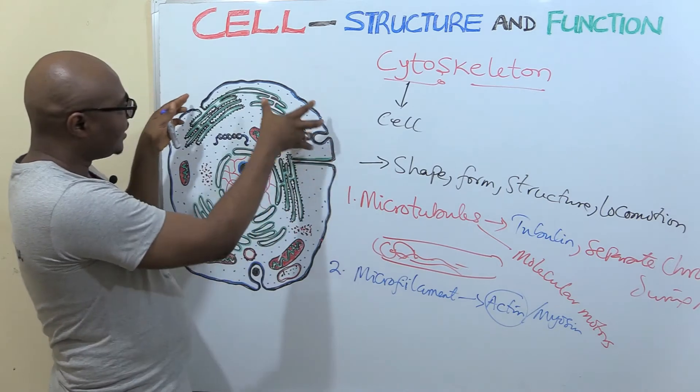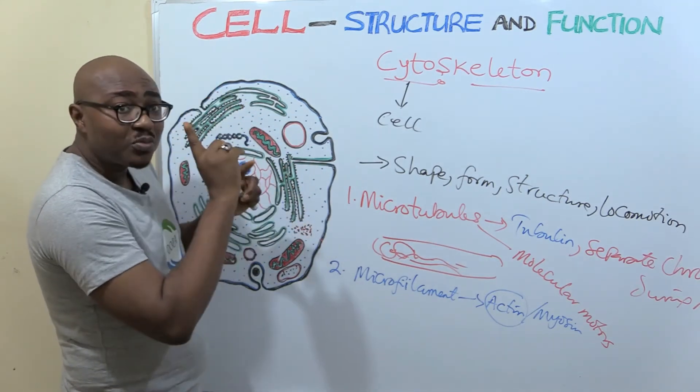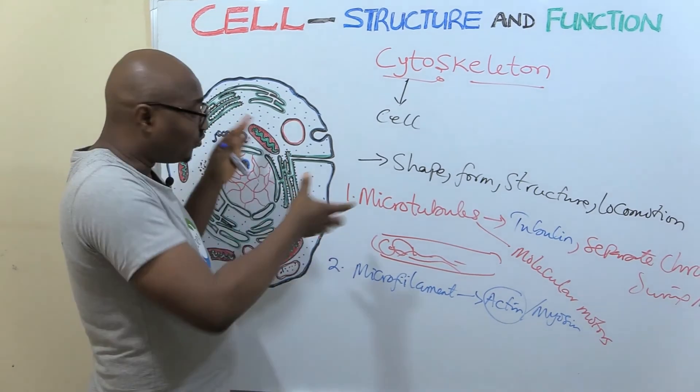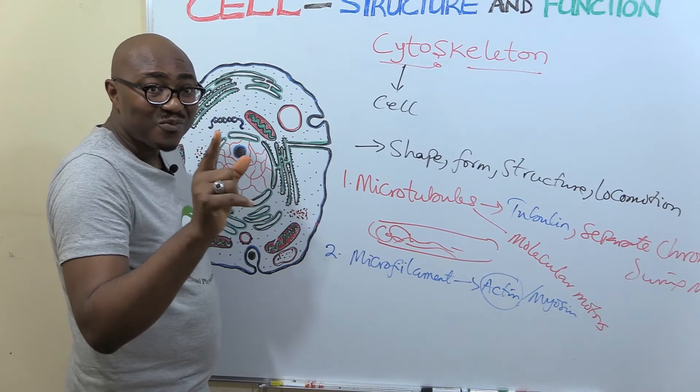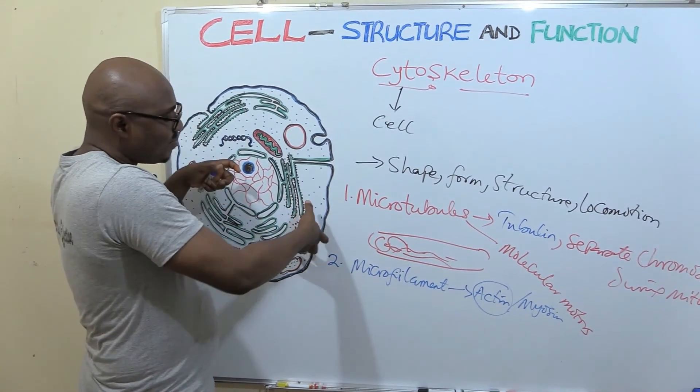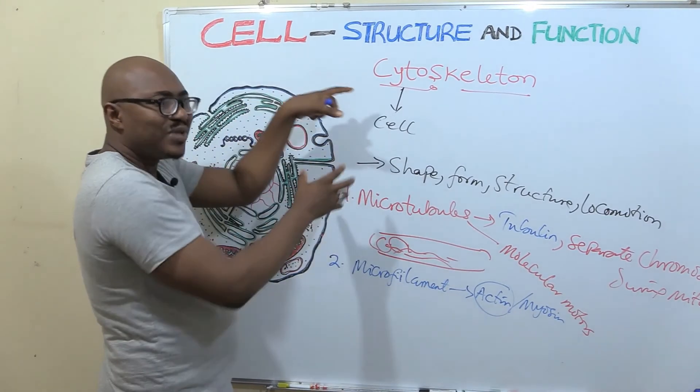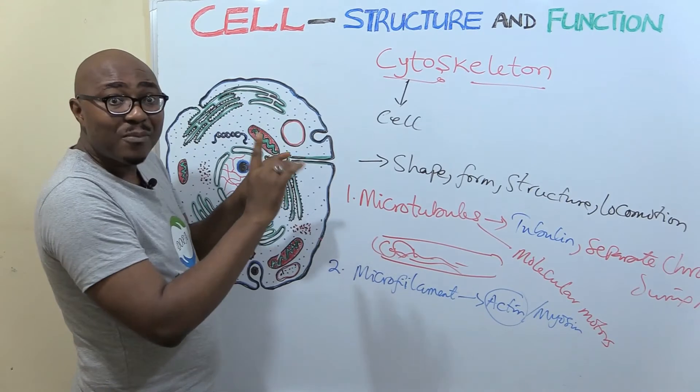When the cell needs to change shape, now look at this, this cell is a bit flexible. But then in some cells, they need to move, the whole cell needs to move. Especially some white blood cells, macrophages, neutrophils. They move to go to where bacteria is to engulf them and destroy them. The same thing amoeba does.